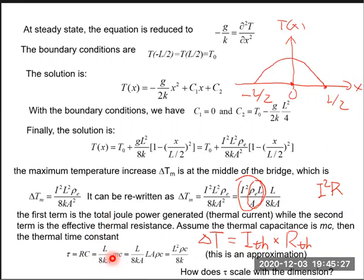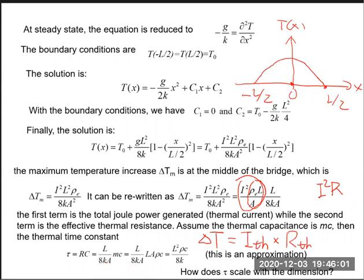This thermal time constant tells you how fast the temperature of this bridge can increase or decrease. If it has a large thermal time constant, it takes a long time to change its temperature. Tau is proportional to its mass and to L, and inversely proportional to the cross-sectional area — though this needs a correction.